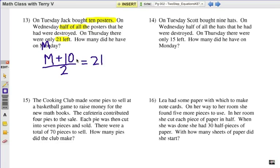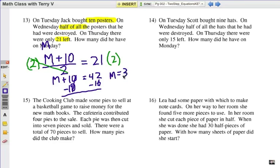After half were destroyed, we end up with 21. So now we have a two-step equation. In a previous video, these two-step equations where you have one side being divided by a number, that two is considered a free number. So you get rid of that first. You want to multiply. That's the opposite of this division. So we're going to multiply both sides by two. Now we have M plus 10 equals 42. We are going to subtract 10 to get our final answer, and that would be 32. M, number of posters he had on Monday, 32.